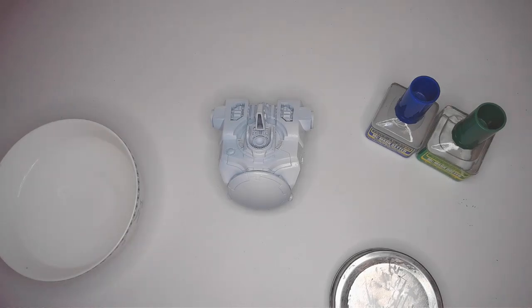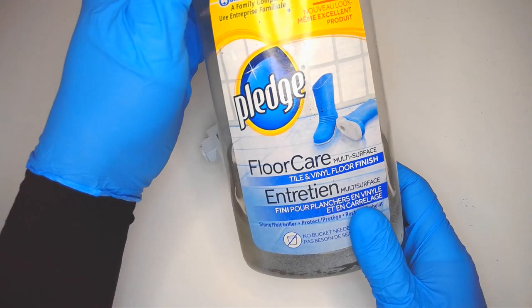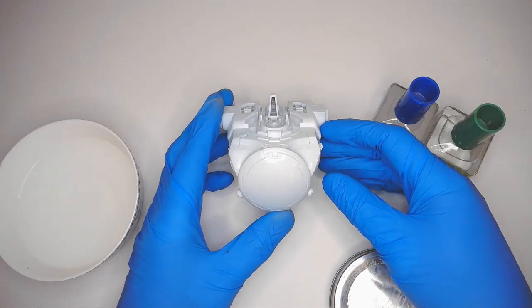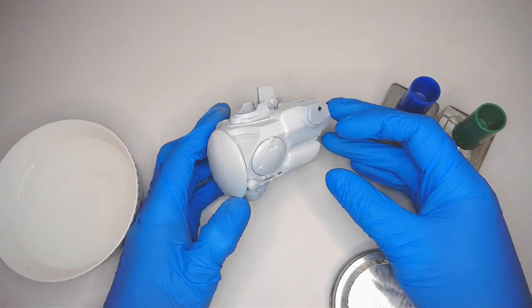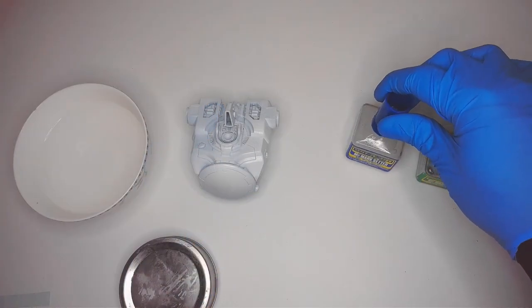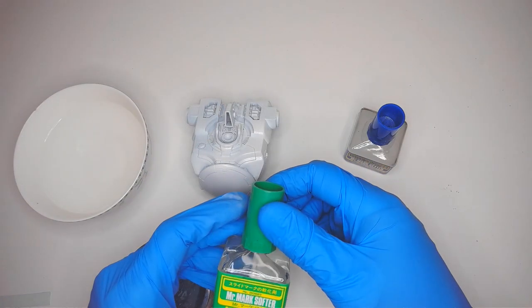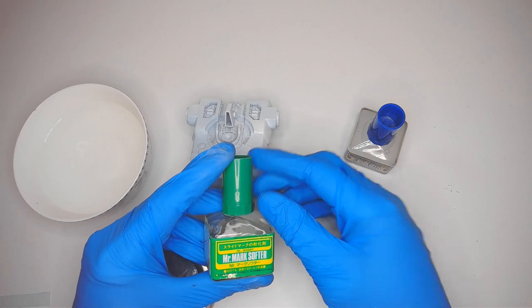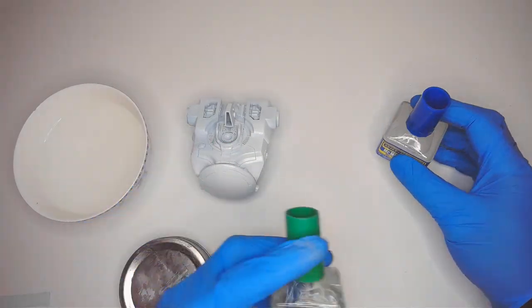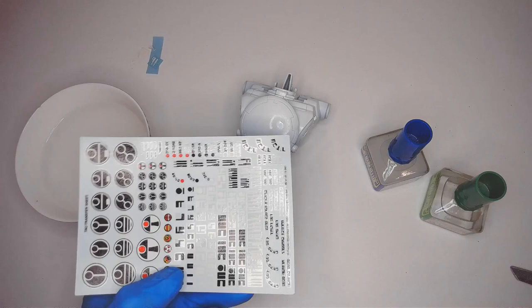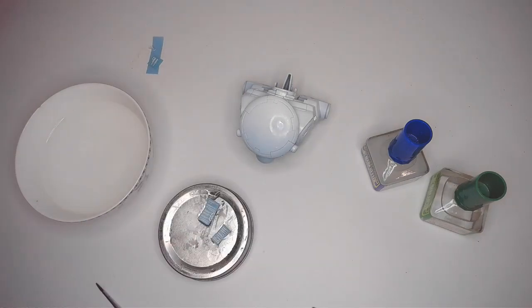I coated the model pieces in this Pledge floor coating. This product has been called Future in the past, and depending on what region you come from, it may be carried under a different name locally. Mr. Mark Setter and Softer help adhere and soften stubborn decals respectively. You'll see me use them to help decals conform to odd contours.